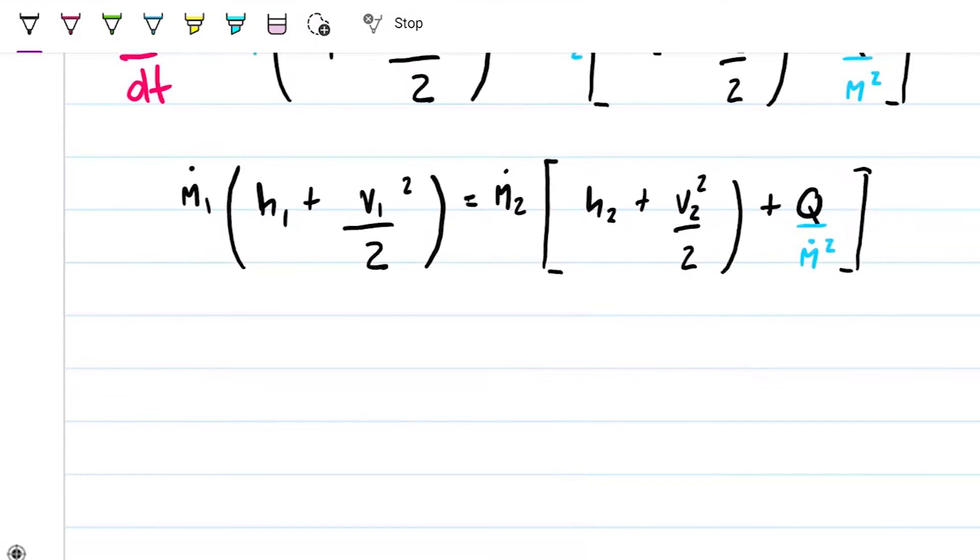And then what we can do now is, again, M1 and M2 are the same. They have to be the same. So therefore I can divide everything by M2 or everything by M1. And I'm going to be left with our simplified version, which is h1 plus v1 squared over 2 equals h2 plus v2 squared over 2. And then this guy, we can't get rid of the mass.